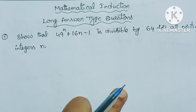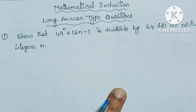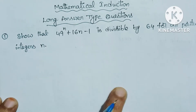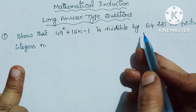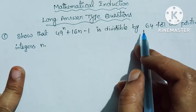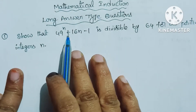Hello everyone, welcome to Stream Math 1. Mathematical induction, first year mathematics 1A, long answer type questions. Most important sums: divisible by 64, divisible by 17, and next 11 — these are important. First priority: divisibility sums.